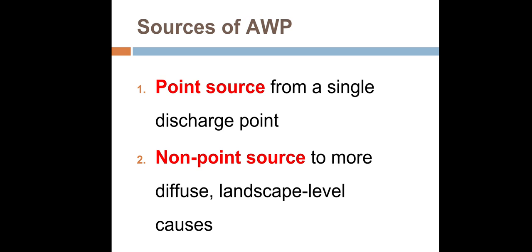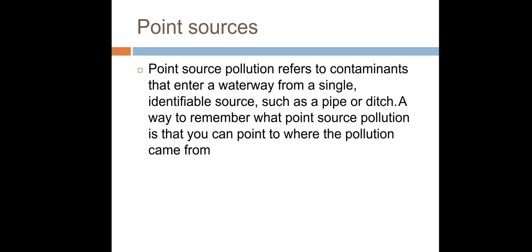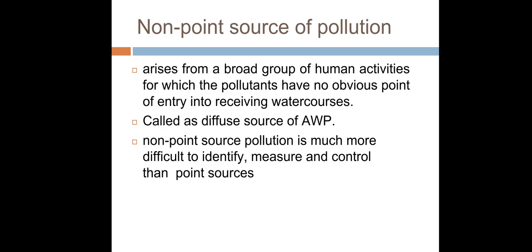There are two sources of agriculture water pollutants: number one, point source — pollution from a single discharge point — and number two, non-point source — more diffuse landscape-level causes. Point source pollution refers to contaminants that enter a waterway from a single identifiable source, such as a pipe or ditch. Non-point source pollution arises from a broad group of human activities where pollutants have no obvious point of entry into receiving water.